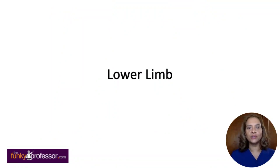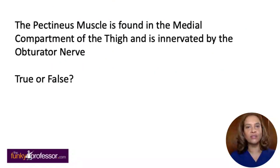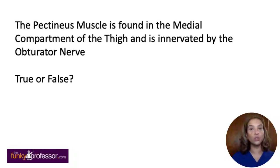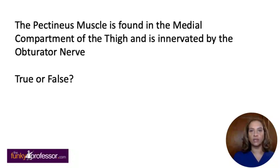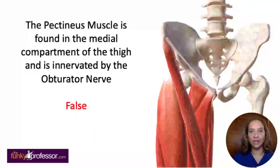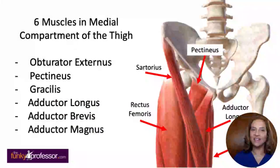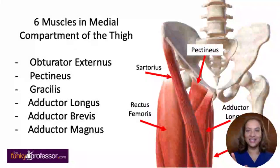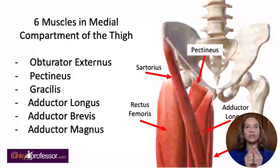Moving to the lower limb questions. The pectineus muscle is found in the medial compartment of the thigh and is innervated by the obturator nerve — is that true or false? The answer is actually false. The pectineus muscle is found in the medial compartment of the thigh, but it is not innervated by the obturator nerve.